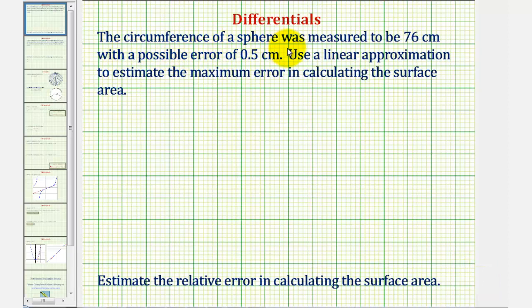The circumference of a sphere was measured to be 76 centimeters with a possible error of 0.5 centimeters. We want to use a linear approximation to estimate the maximum error in calculating the surface area.